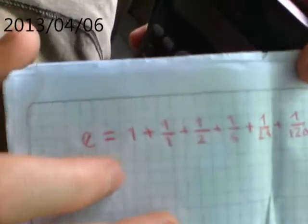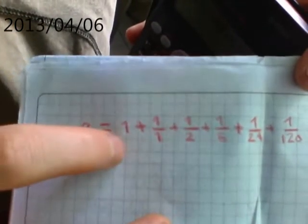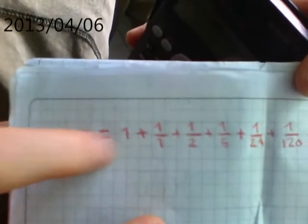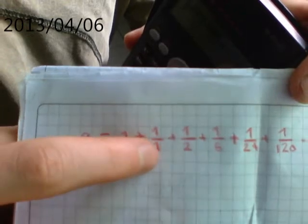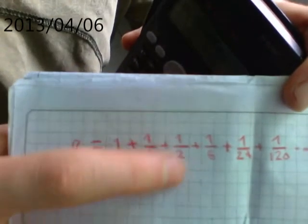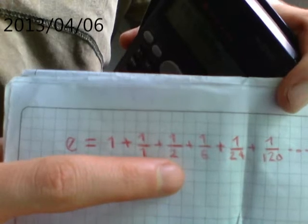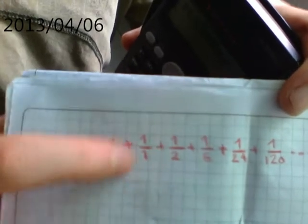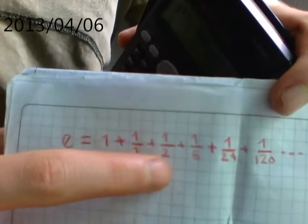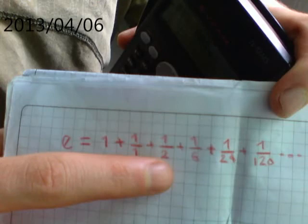At this point you can see E — 1 plus 1 over 1. We're going to try to get closer to the value. The next step gives 2 plus 1 over 2, which equals 2.5, and so on.